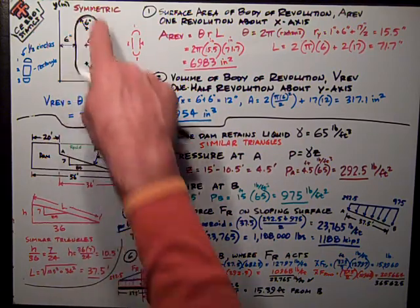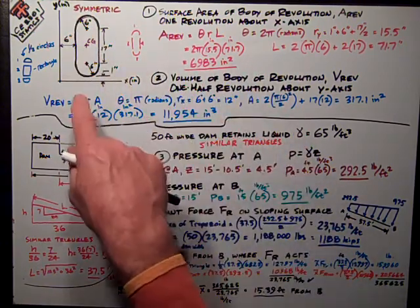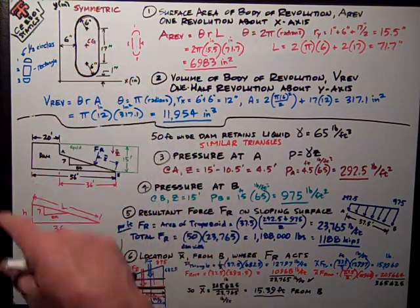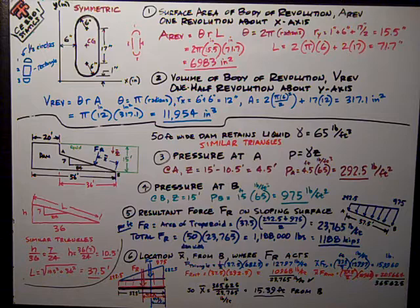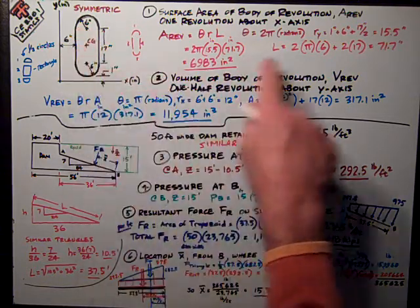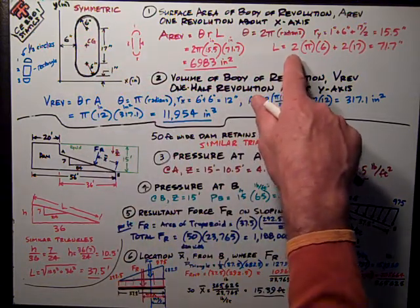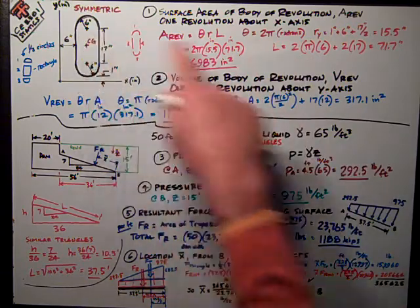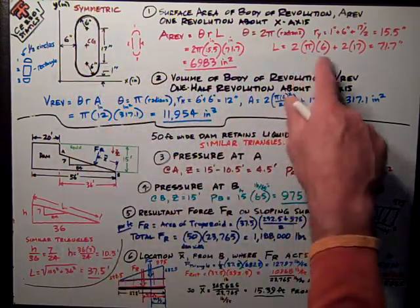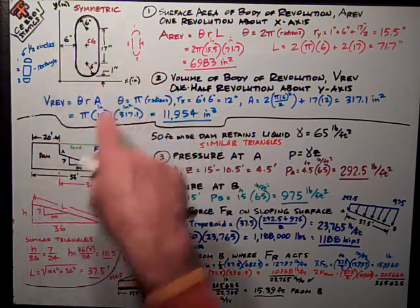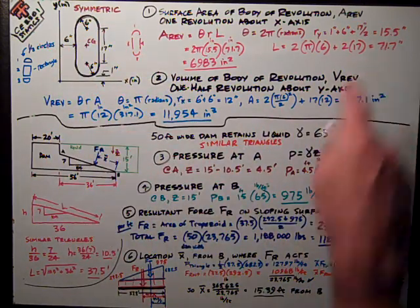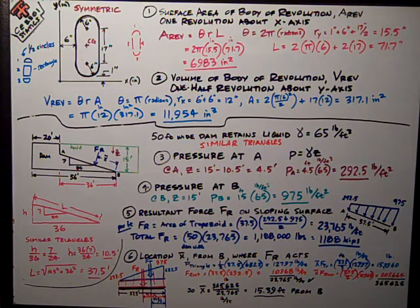I've got two half circles, which the circumference of a circle is πd. Half of a circle is πr, and I've got two of them, so the length is 2π times 6. That covers the half circles. Plus, I've got two sides that are 17 inches long, just straight lines. Makes a total of 71.7 inches.